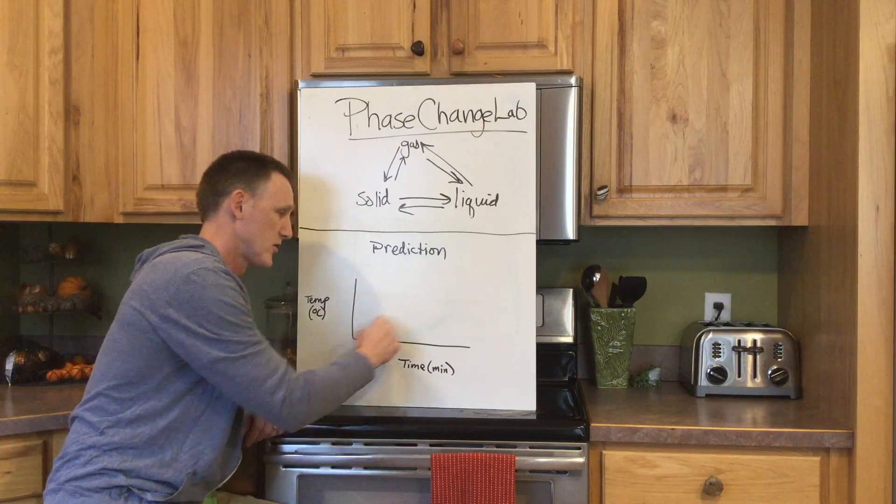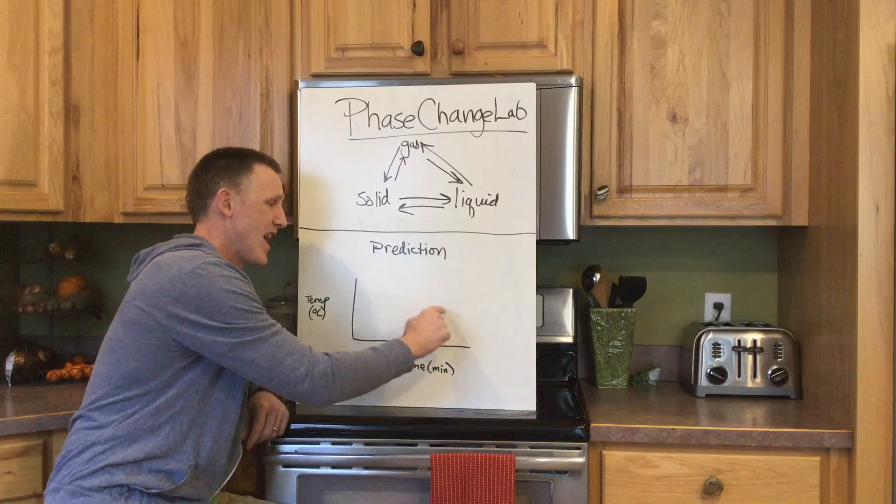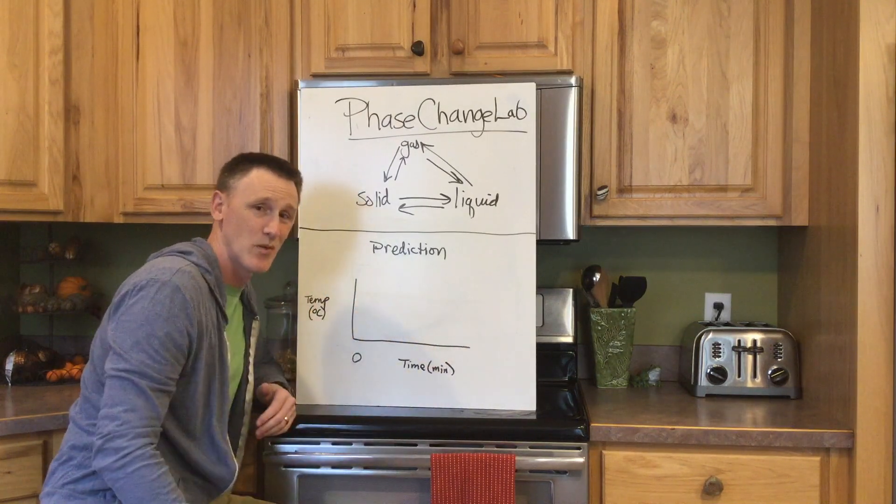Now your line could be straight up, it could be down, it could be flat, it could be up and down. What do you think? What's your prediction?